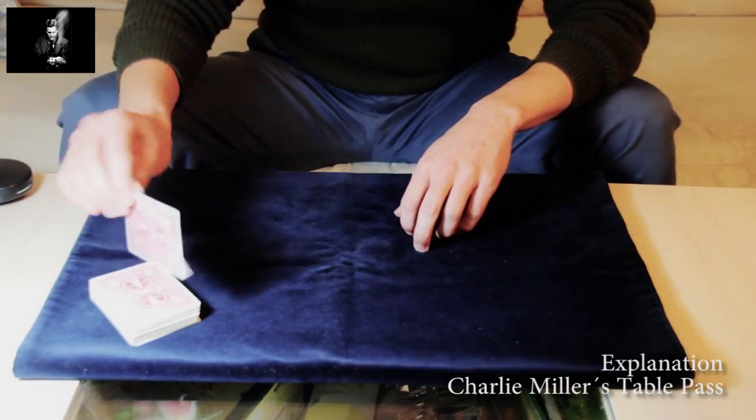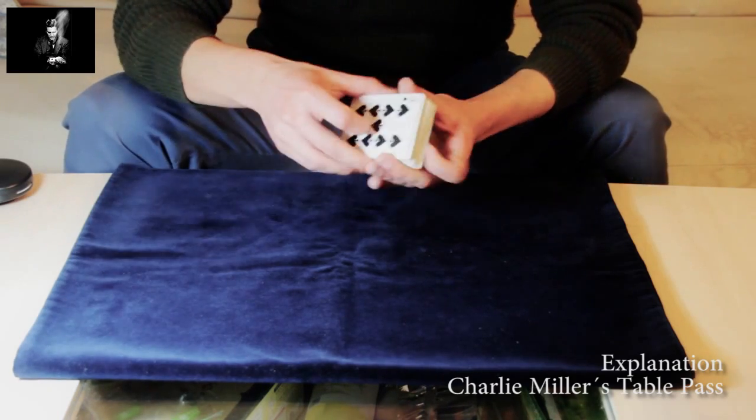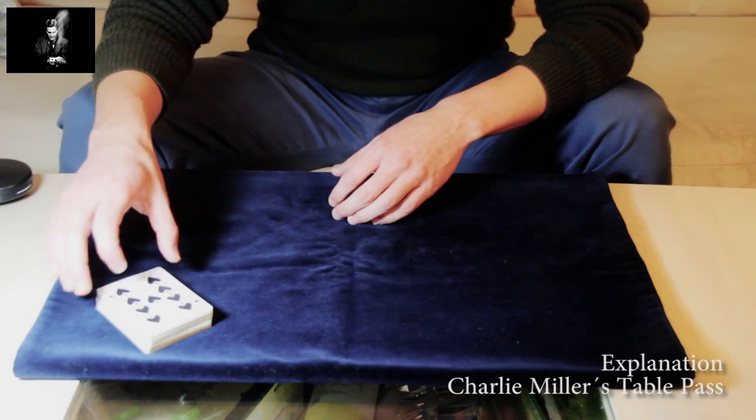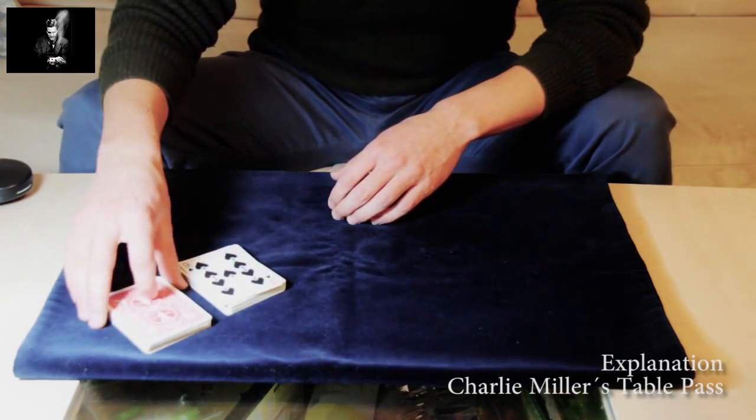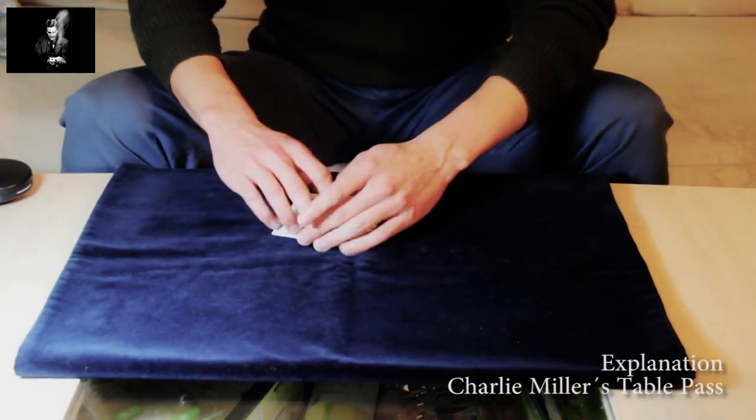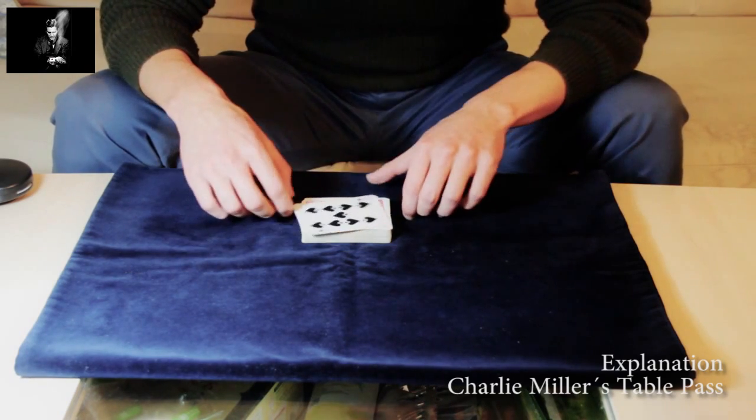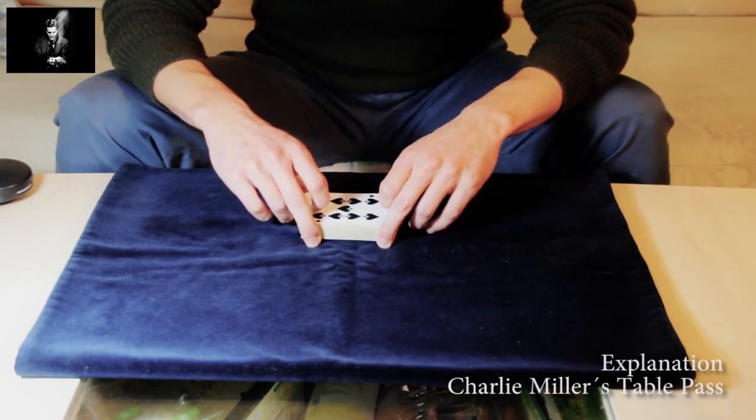So let's say you have a card selected, the nine of spades. I will, for the sake of the explanation, leave it face up and the deck is cut. But after the move, the face-up card ends up on the top of the deck.